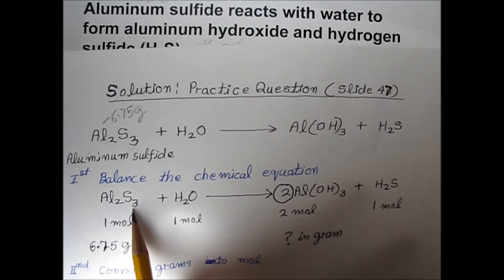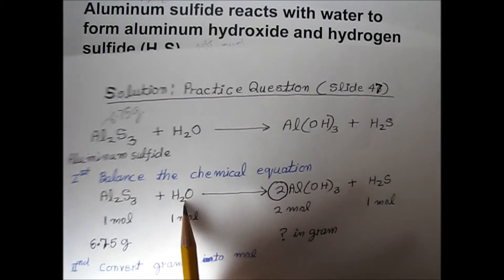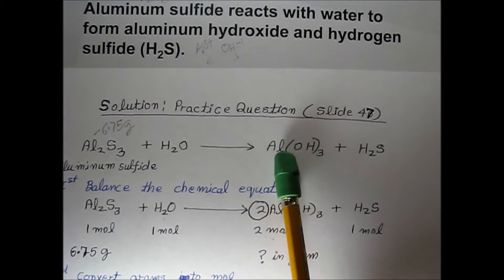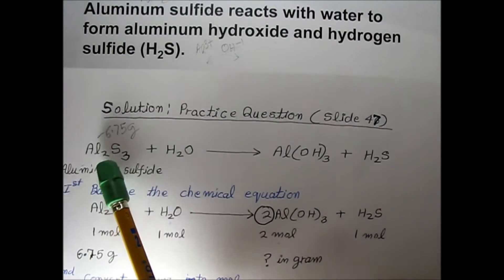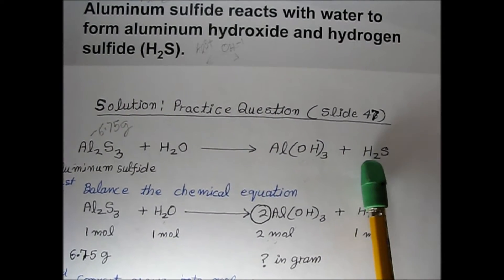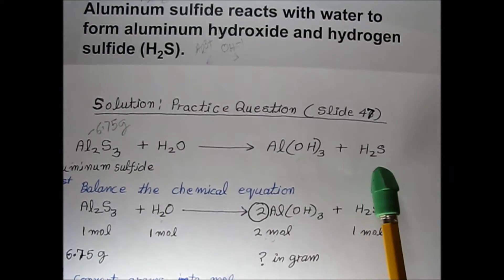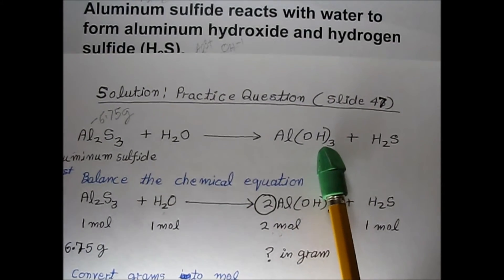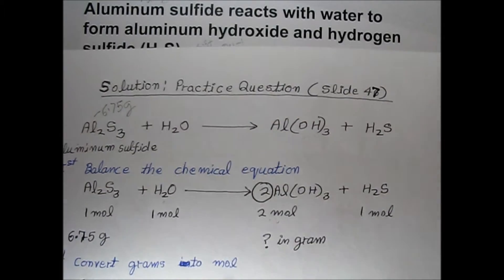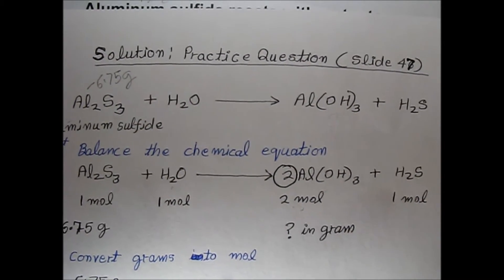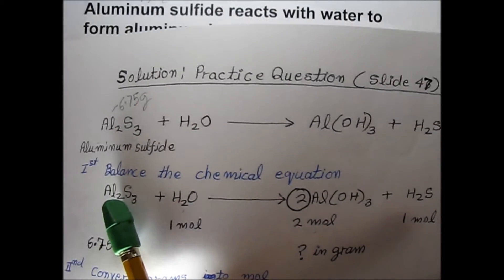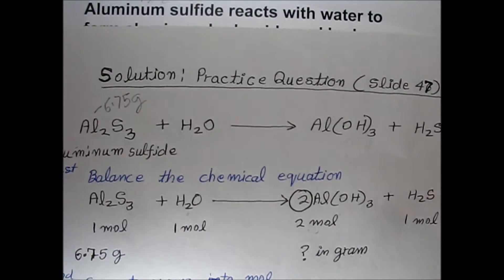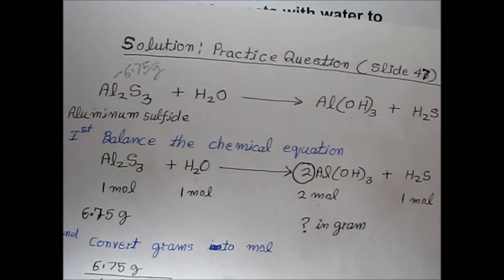To balance the reaction: on the left side there are 2 aluminum from Al₂S₃, but only 1 aluminum on the right in Al(OH)₃, so we add a coefficient of 2 to aluminum hydroxide. Now aluminum is balanced. However, hydrogen is still not balanced — there are 3 hydrogens from each OH group and 2 coefficient gives 6 on that side.